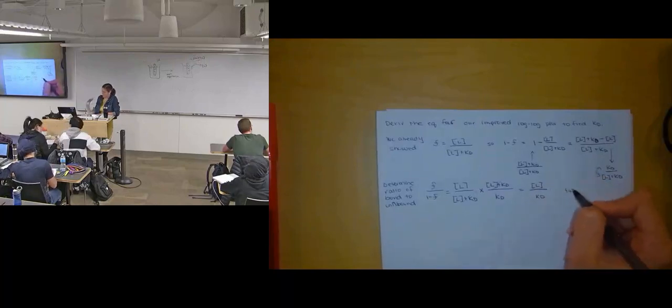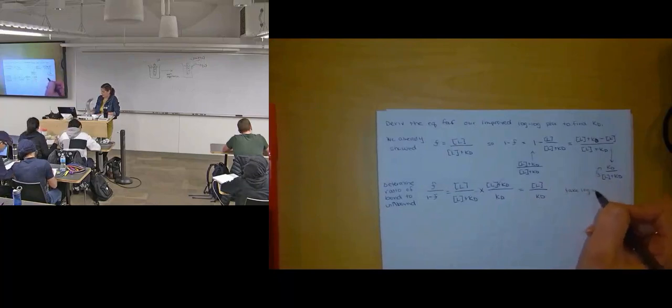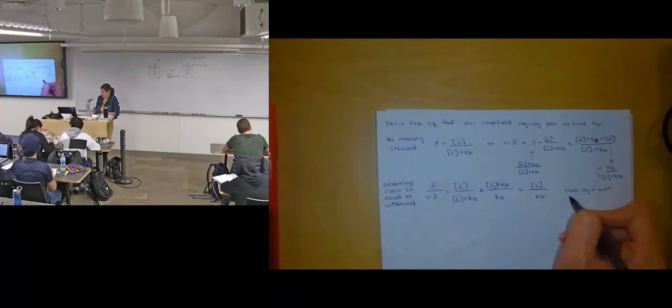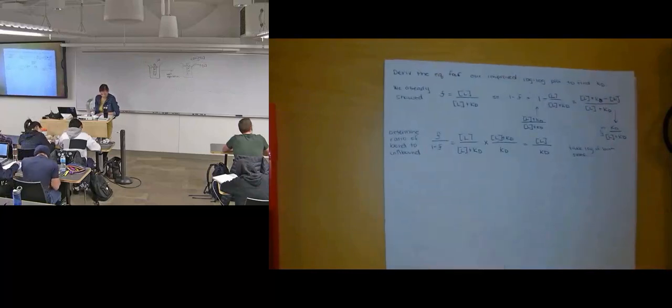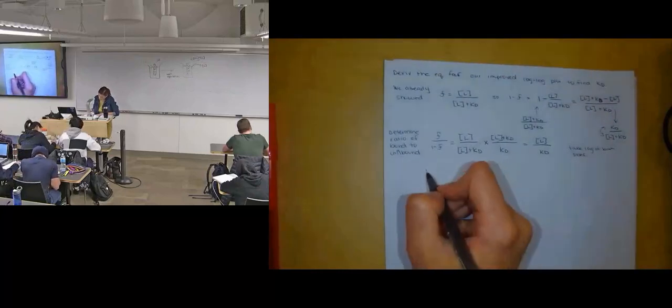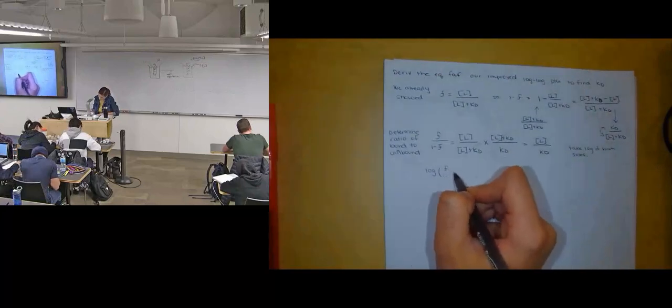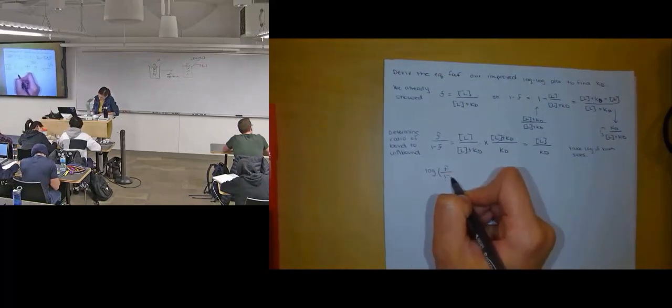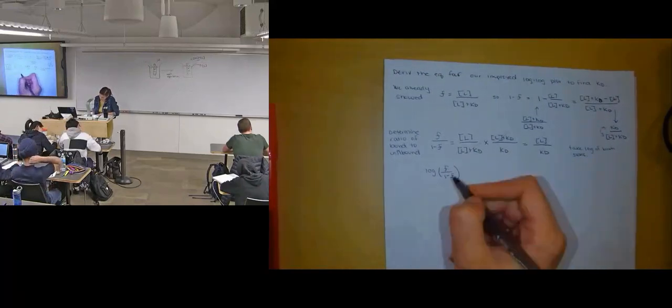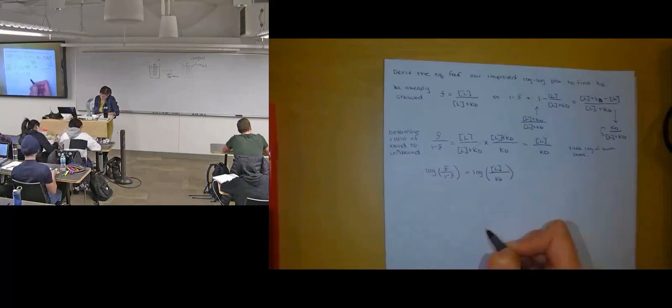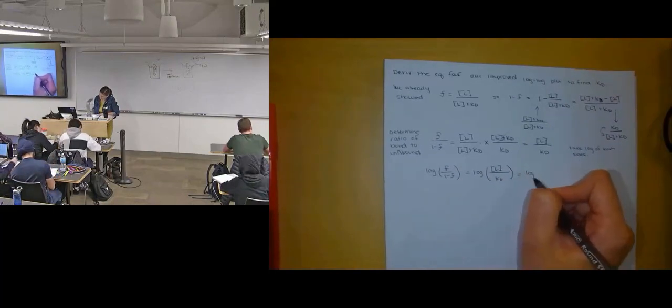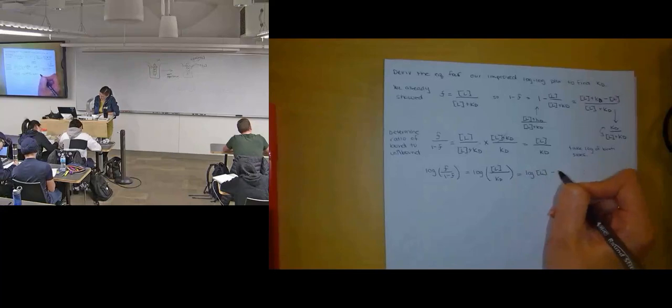I'm going to take the log of both sides. And what I will have is the log of fractional occupancy over 1 minus fractional occupancy is equal to the log of the free ligand concentration over my dissociation constant, which can be rewritten based on properties of logs.